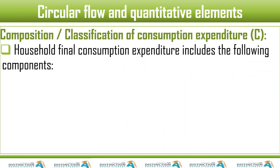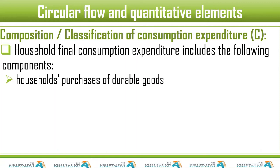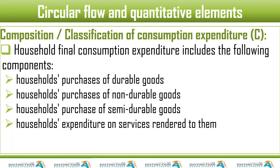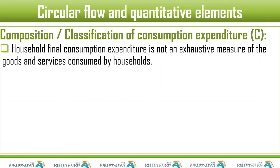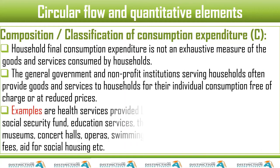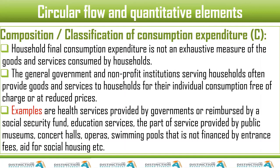Households' final consumption expenditure includes the following components: purchase of durable goods, purchase of non-durable goods, purchase of semi-durable goods, and purchase of services rendered to them. Household final consumption expenditure is not an exhaustive measure of the goods and services consumed by us — there are things we consume that we don't pay for, such as goods or services provided by government.